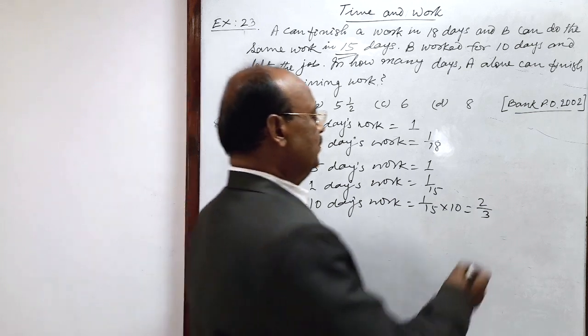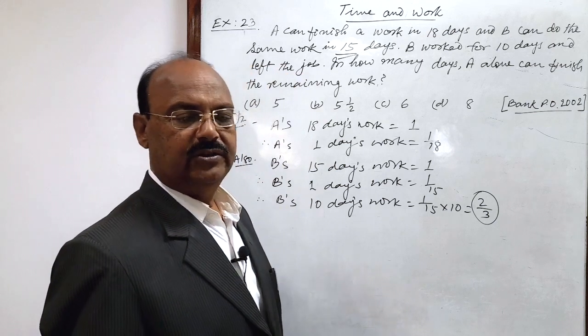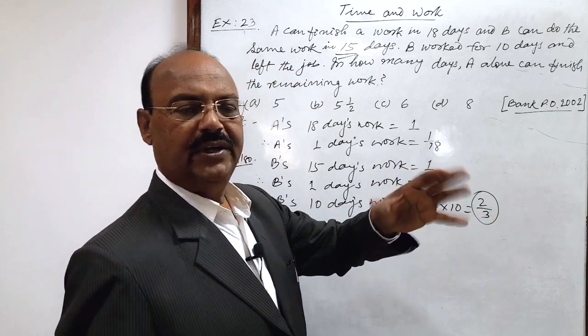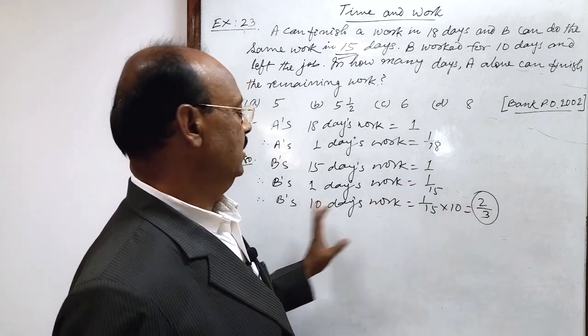This much part of the job has been completed. So remaining job is how much? 1 minus this much. 1 is complete job and this much part has been already done by B in 10 days.